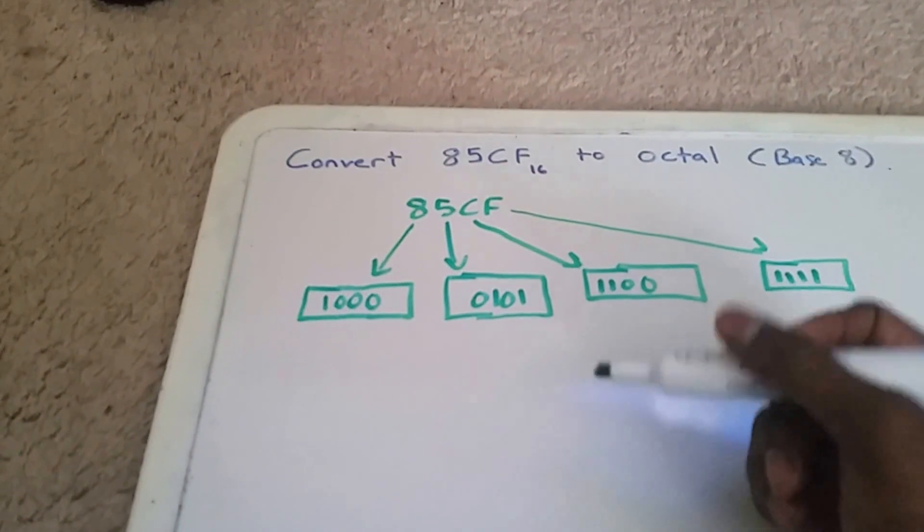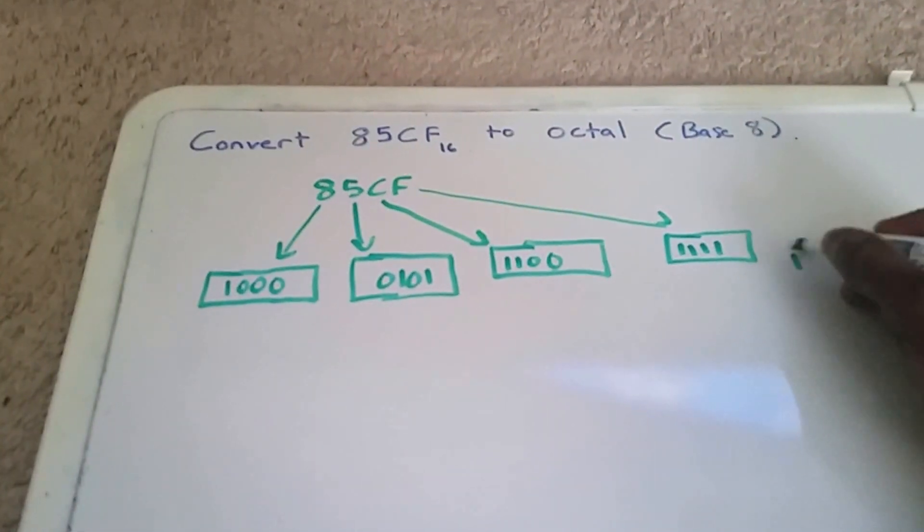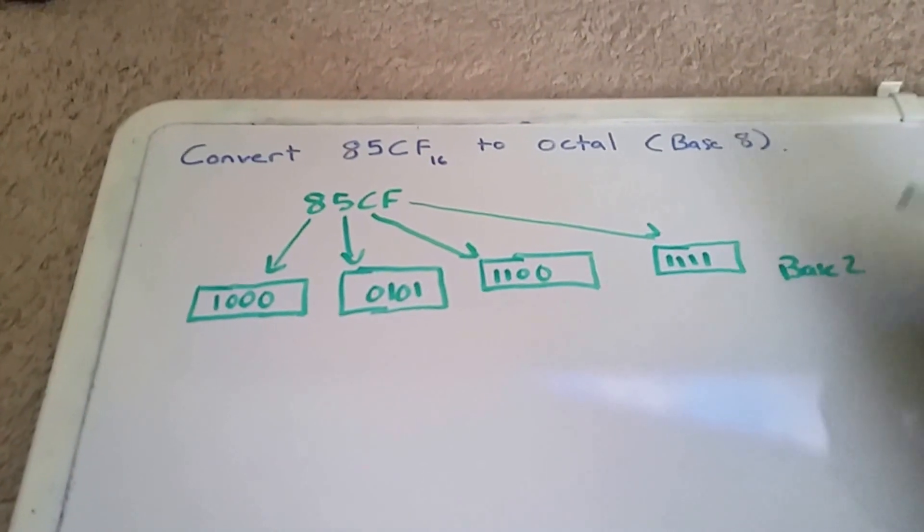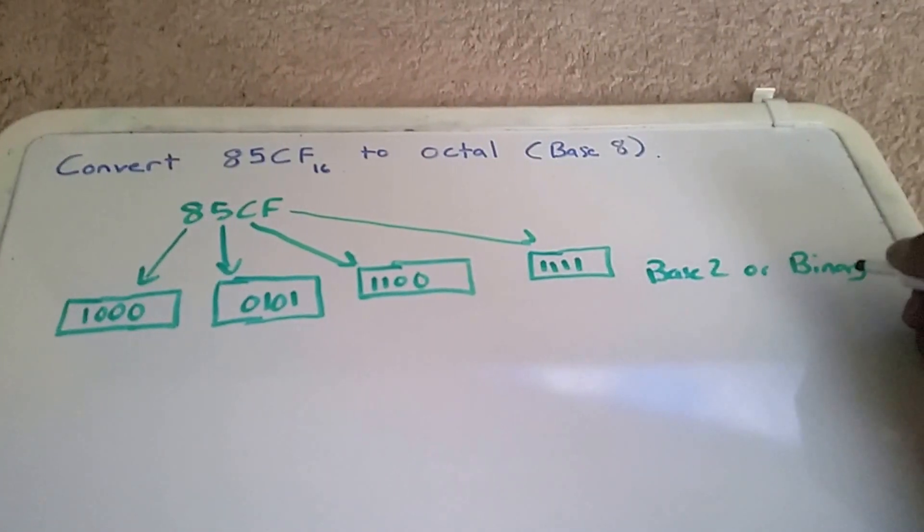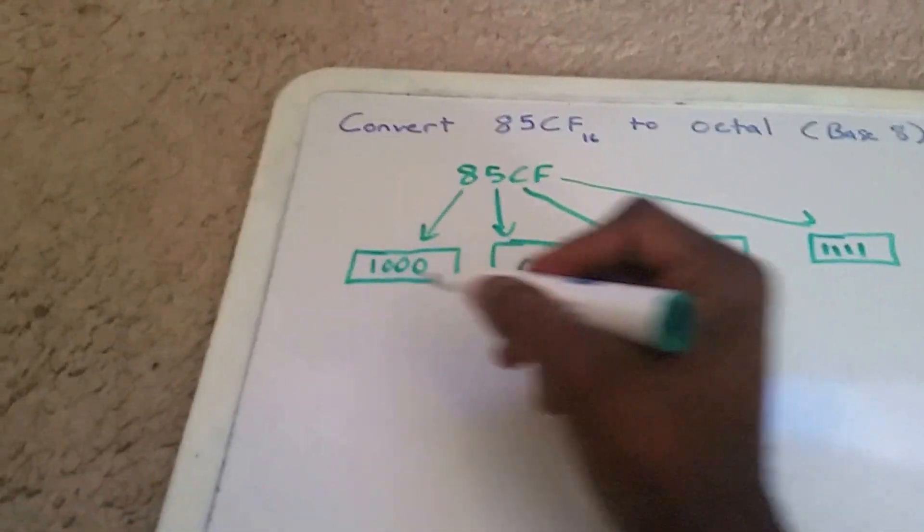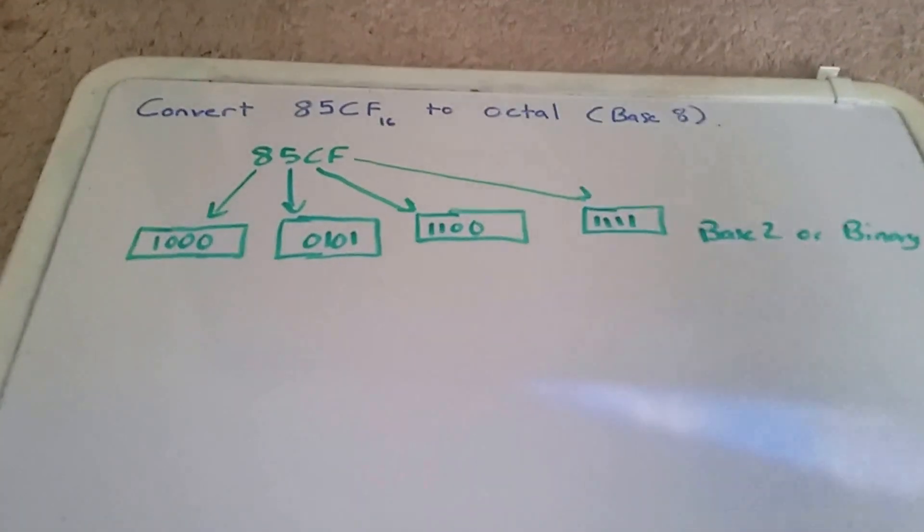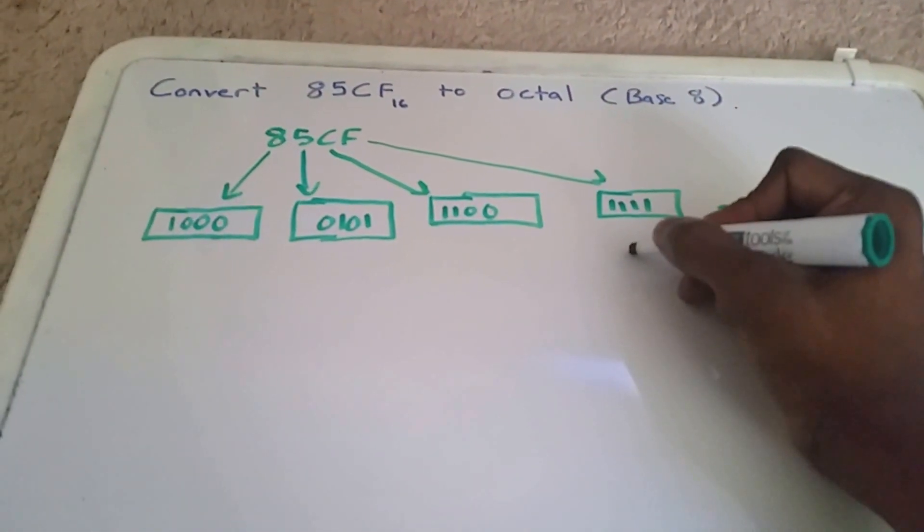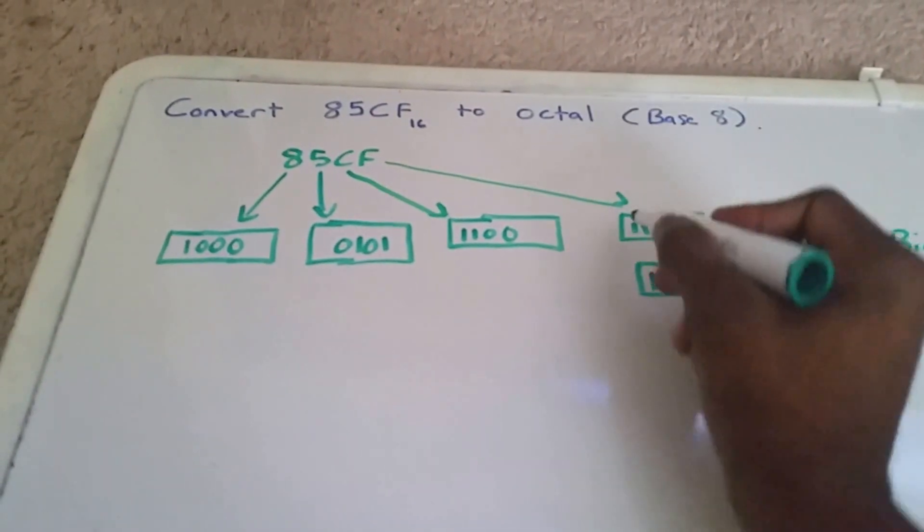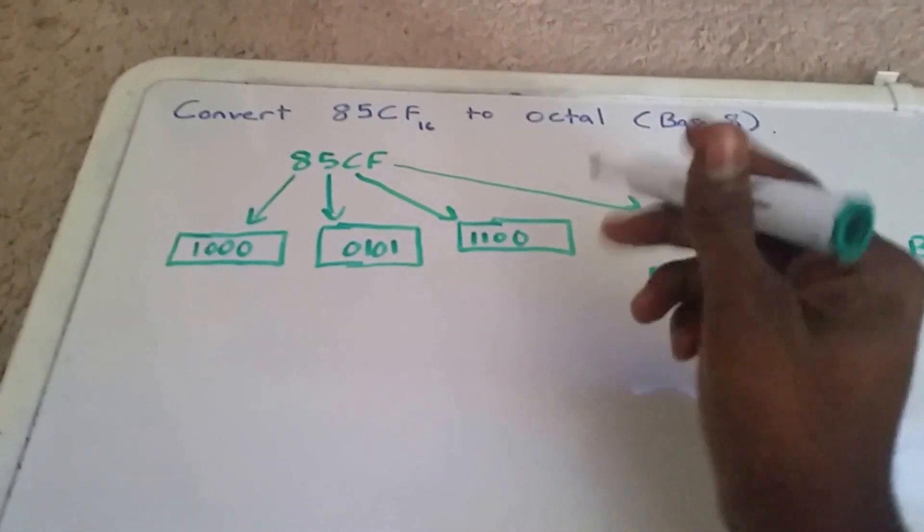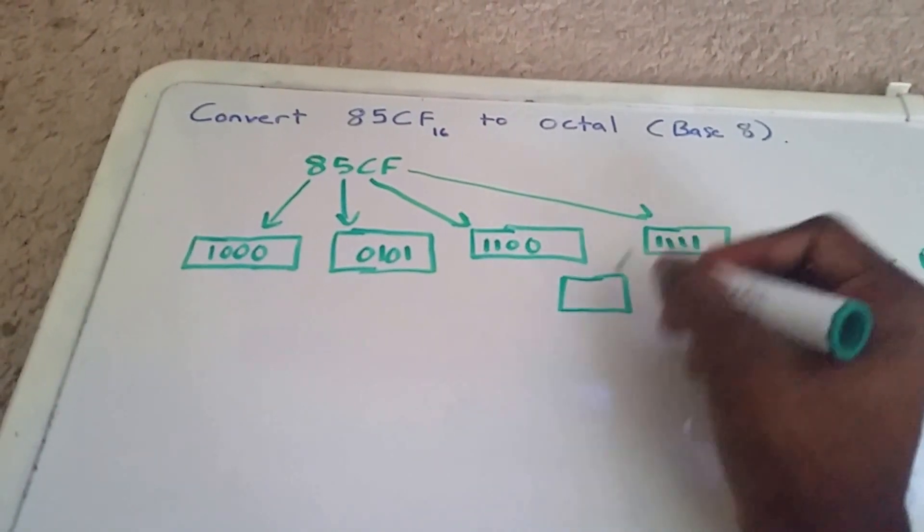Now what we're going to do is we're going to convert from base 2—so I'll put over here this is base 2 or binary—and now what we're going to do is we're going to convert each one to base 8. So what we do is we take three of the digits, so two, three from here, and then we want to combine these three over here.